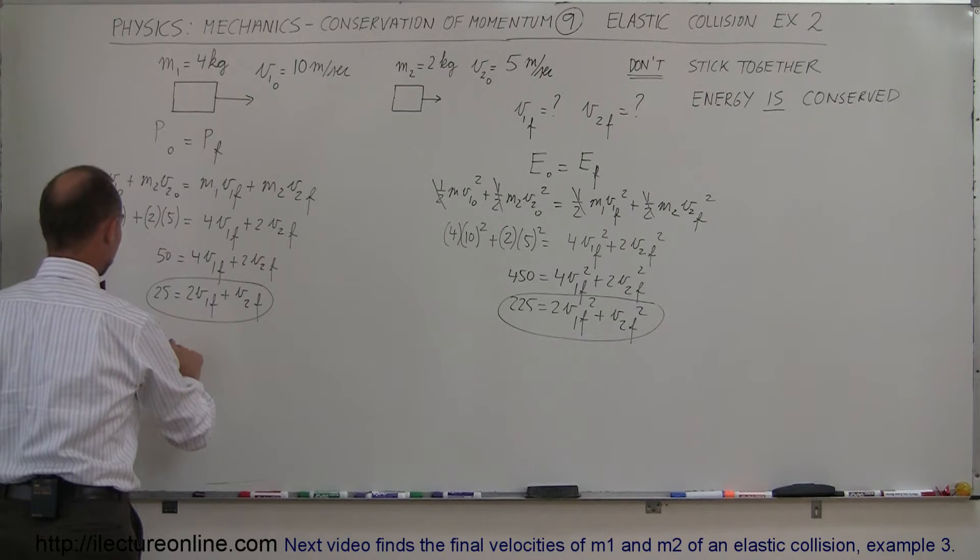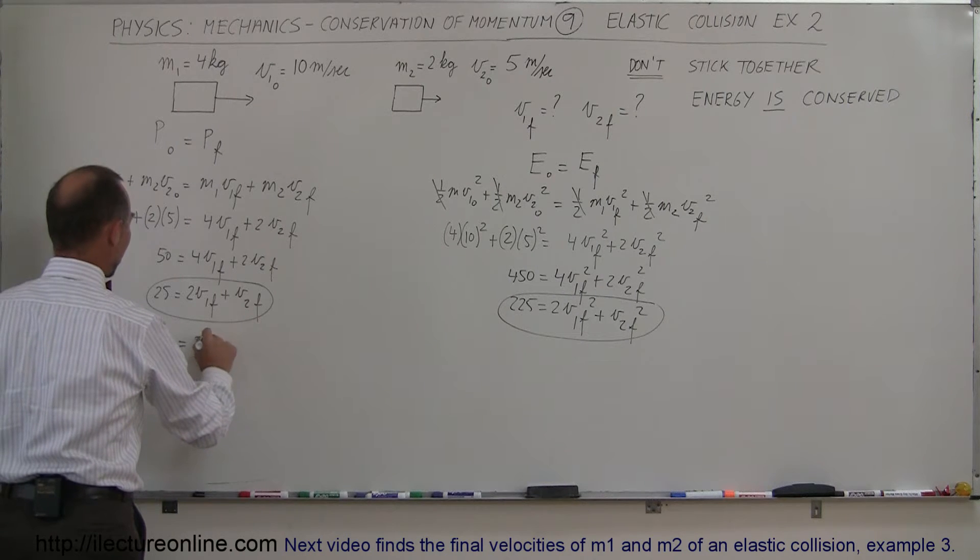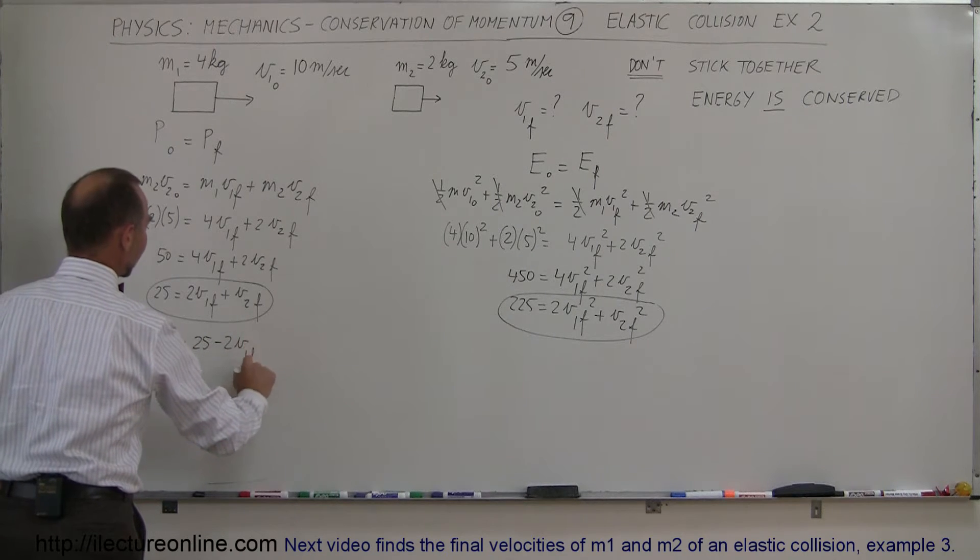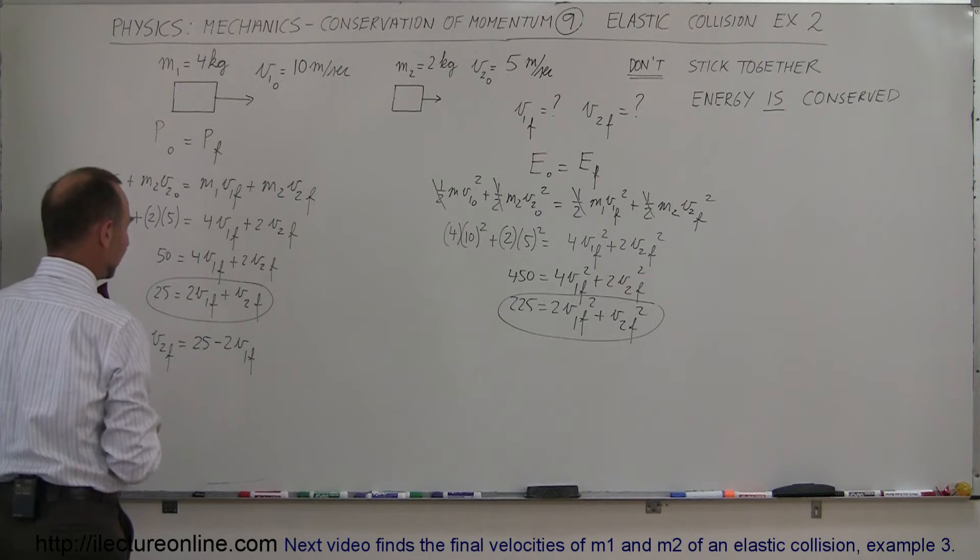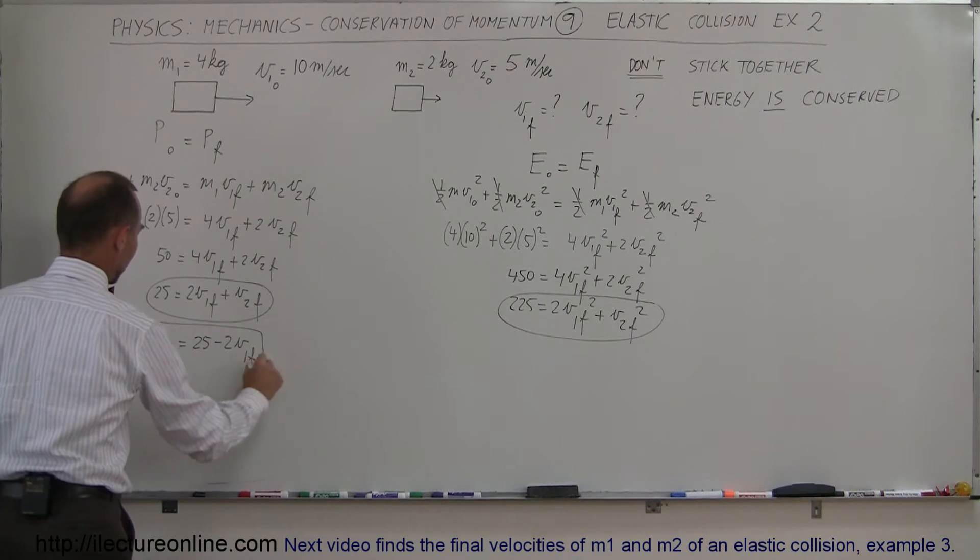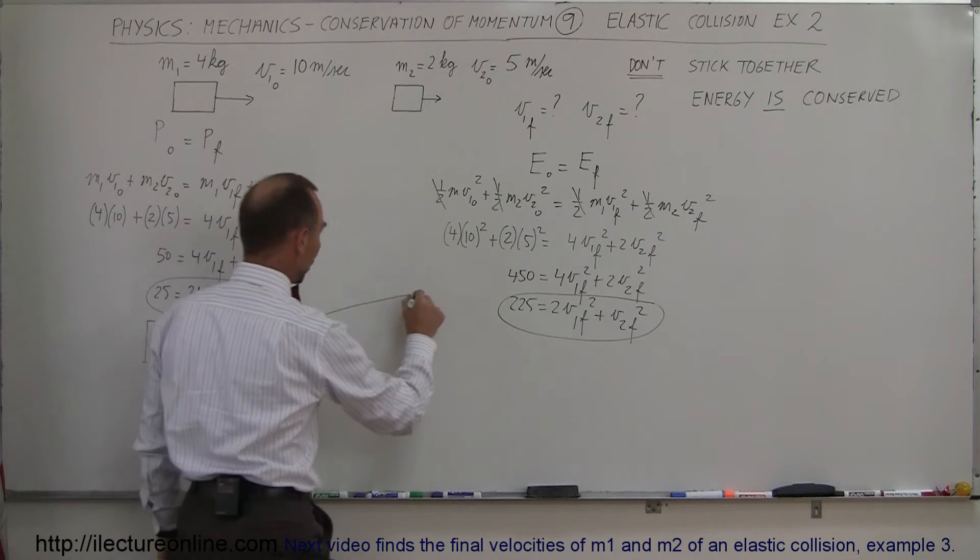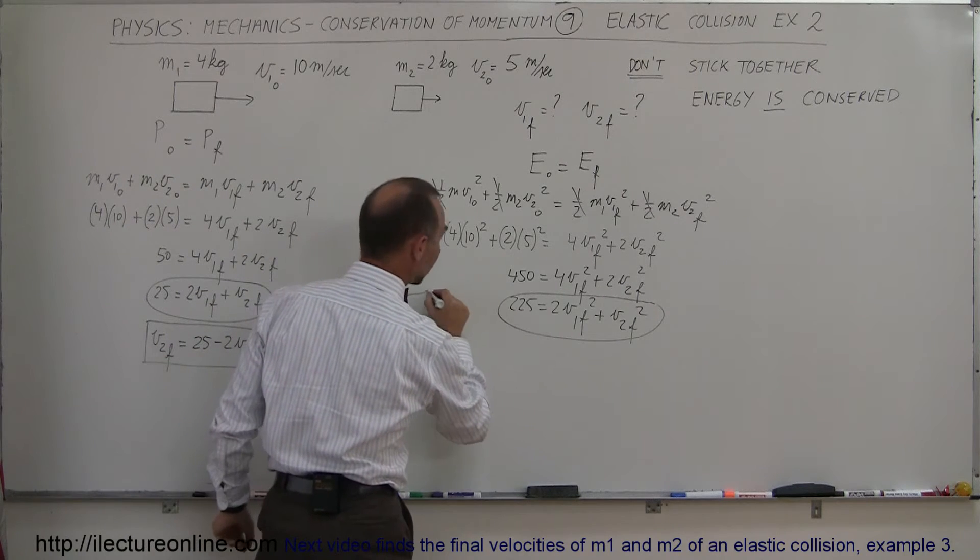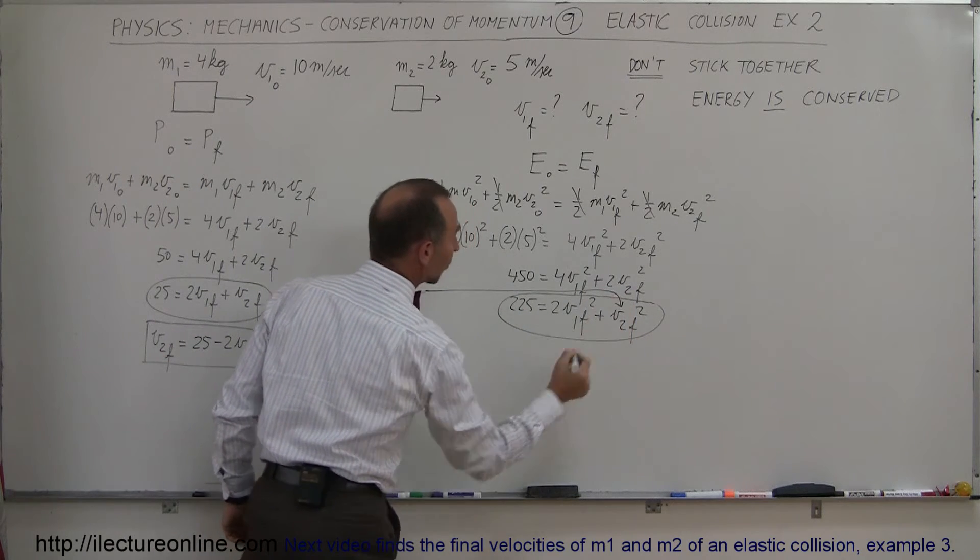So here we can write that V2 final is equal to 25 minus 2 V1 final, simply moving this over to the other side, and then we take this and plug it into our equation. So we have V2 final solved, so we'll plug it into this right there.